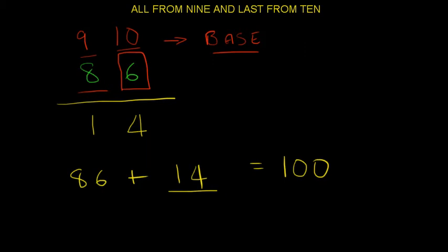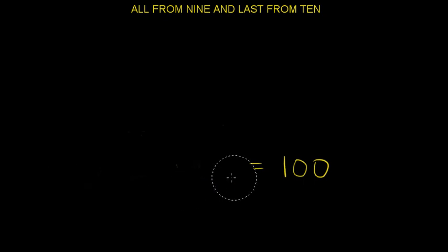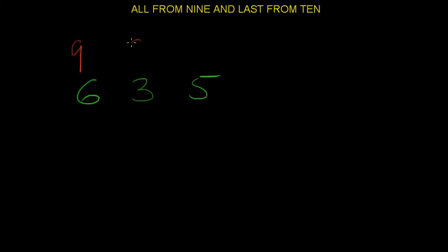Let me do some more problems so you get a proper hang of this. Let's do a bigger number, a 3-digit number. Let's take the number 635. So, all from 9, all from 9, last from 10. And what do we get? 3, 6, 5.